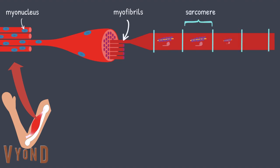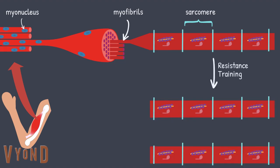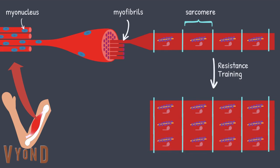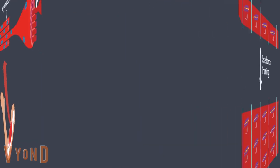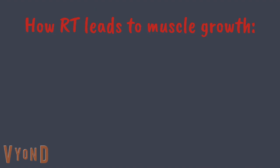short sections of contractile proteins that allow muscles to produce force. Resistance training induced hypertrophy occurs due to the addition of these sarcomeres added in parallel. The process through which resistance training induces hypertrophy involves three primary steps.